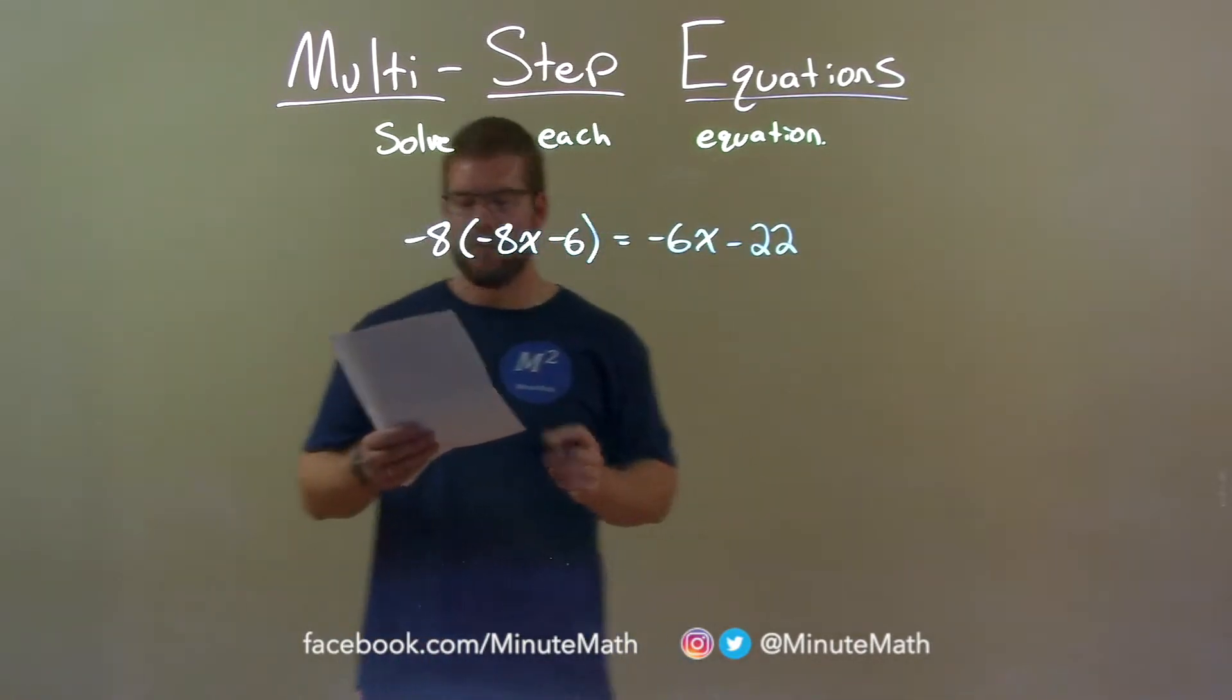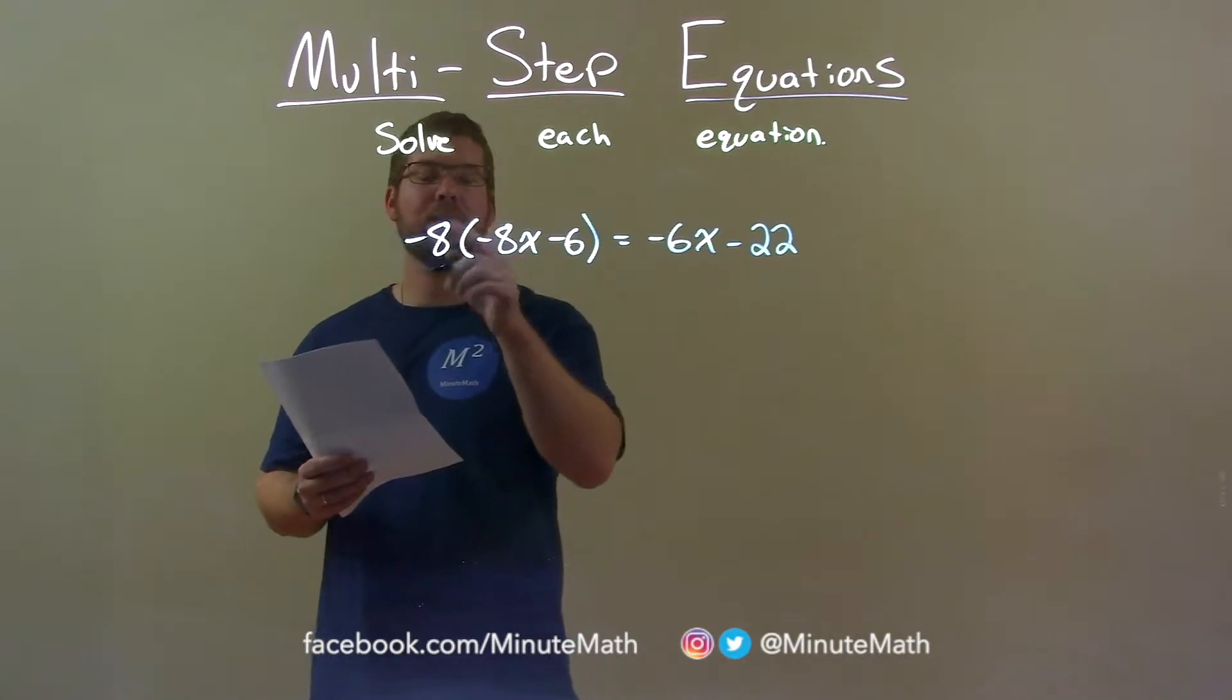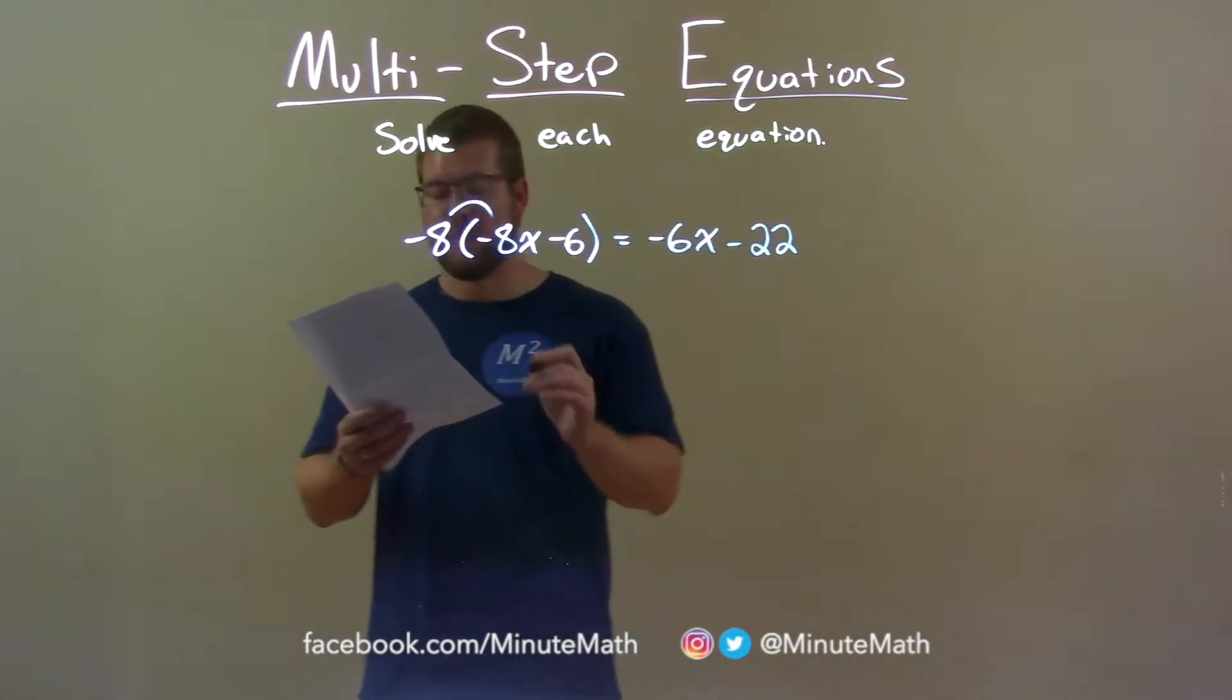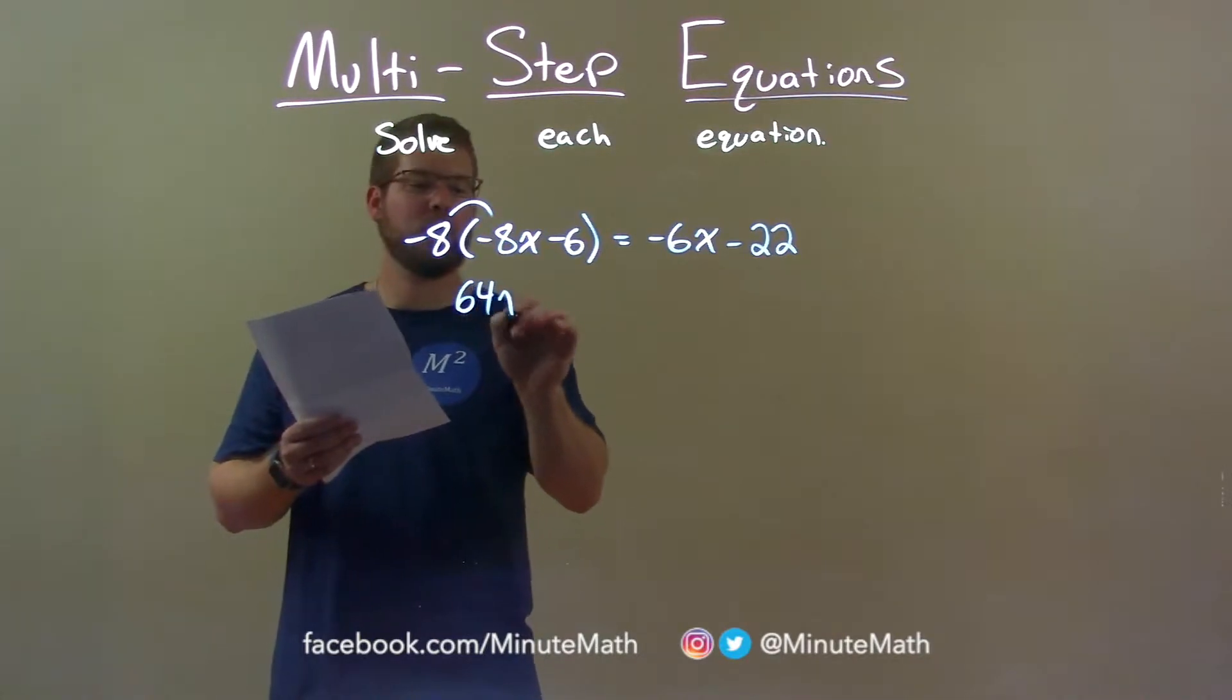I want to get x by itself. My first step in doing so is distributing the negative 8 in the parentheses. Negative 8 times negative 8 is positive 64, then don't forget the x.